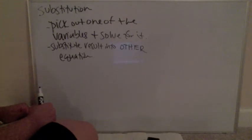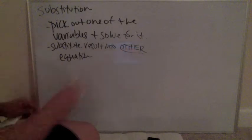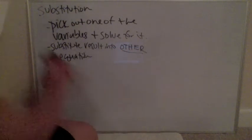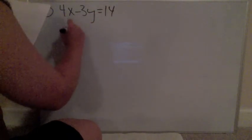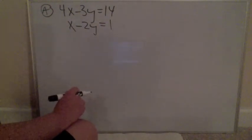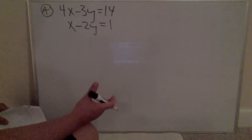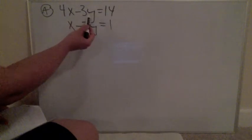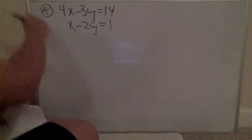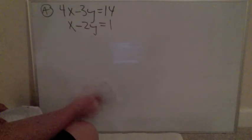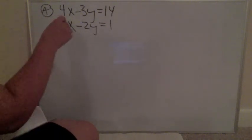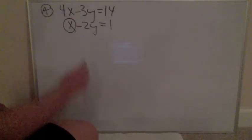The steps for substitution are: pick one variable and solve for it, then substitute that result into the other equation — it must go into the other one. For our example: 4x subtract 3y equals 14, and x subtract 2y equals 1. Step one is to pick any unknown to solve for. You have four choices. The easiest here is x in the second equation since it's on its own.